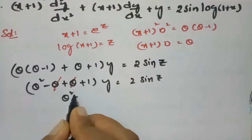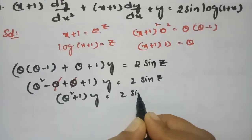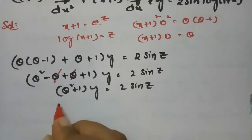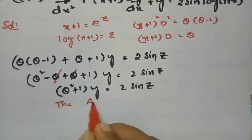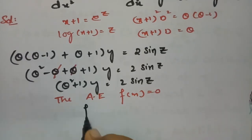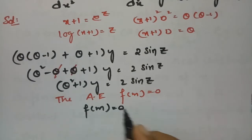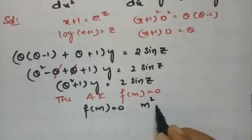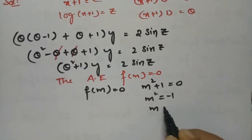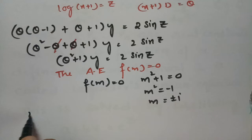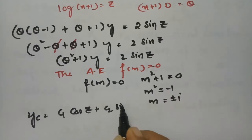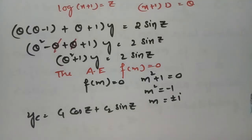If I cancel theta terms, what remains is θ² + 1 of y equals 2·sine z. First we have to find the complementary factor. For that, the auxiliary equation is f(m) = 0. So in place of θ we write m: m² + 1 = 0, giving m² = -1, and therefore m = ±i.